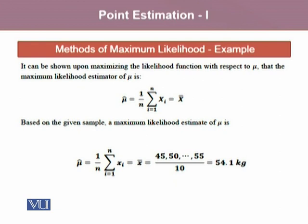Since we know that the maximum likelihood estimator for the population mean mu is x-bar, we use x-bar as the MLE to estimate the mean weight of those 10 individuals. Hence, mu-cap equals 1 over n times the sum from i equals 1 to n of xi, which gives us 54.1 kilograms. The estimated mean weight of the 10 individuals observed is 54.1 kilograms.